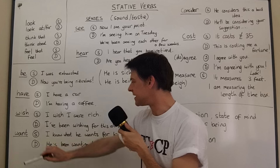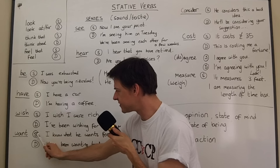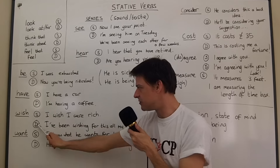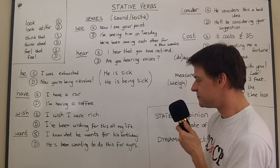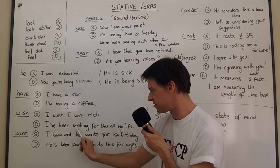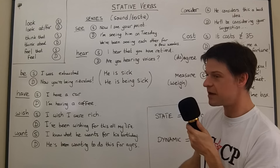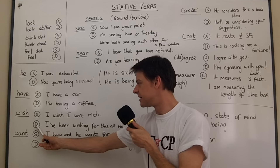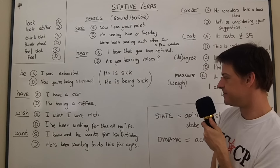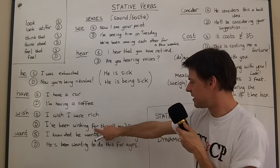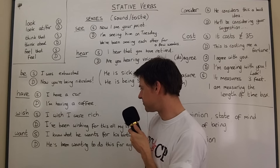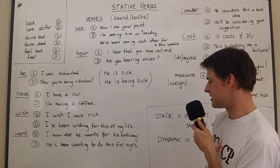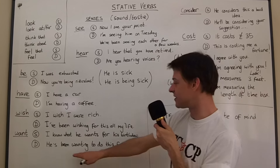'Wish' and 'want' are most of the time stative verbs. However, you do very rarely see them used dynamically — often in the present perfect or past perfect continuous. For example, 'I wish I were rich' is a typical stative regret. But dynamically: 'I've been wishing for this all my life,' stressing duration. Similarly, 'he's been wanting to do this for ages' — very common now and it doesn't sound like a mistake.